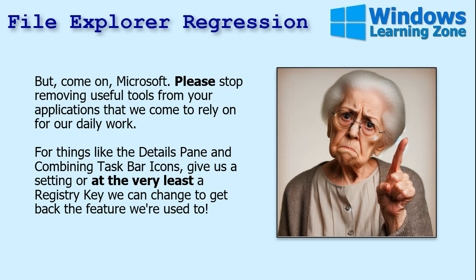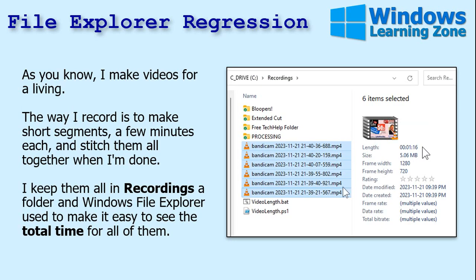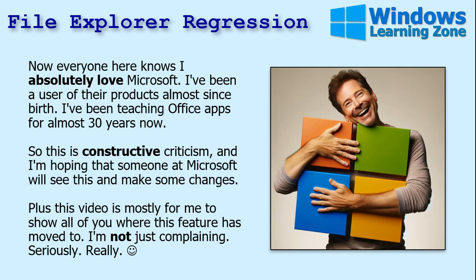But Microsoft, please stop removing useful tools from your applications that we come to rely on in our daily work — things like the details pane data and combined taskbar icons. At least give us a setting, or at the very least a registry key, so we can get back to the feature we're used to. There's no benefit to this. The ribbon was a great upgrade with real benefit; there's no benefit to getting rid of showing us file information in the details pane.